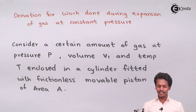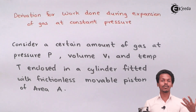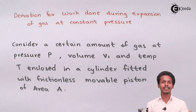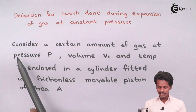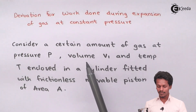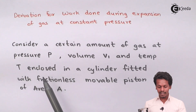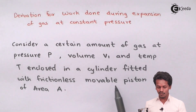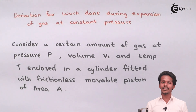We are going to talk about the derivation for the work done during expansion of a gas at constant pressure, and this is the work done in an irreversible process. So for that, let us consider a certain amount of gas at pressure P having a volume of V1 and temperature T, which is enclosed in a cylinder fitted with a frictionless movable piston of area A. I have drawn a diagram so that it would be very much easier to understand.